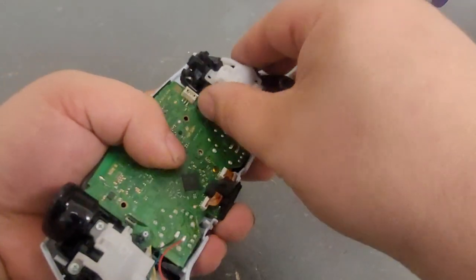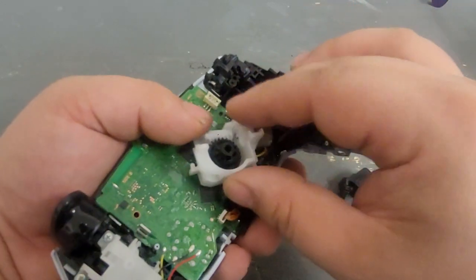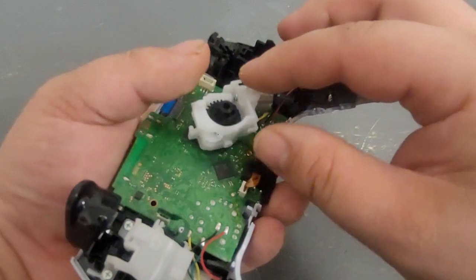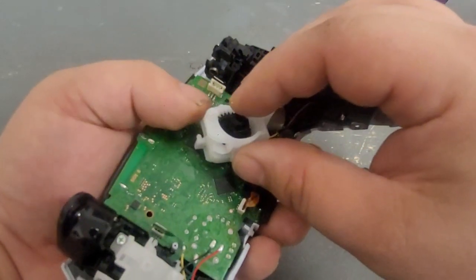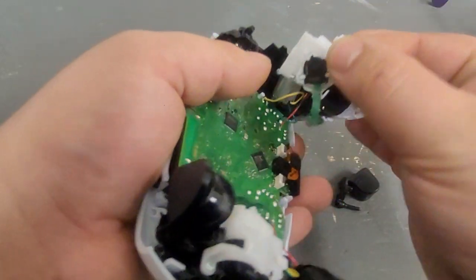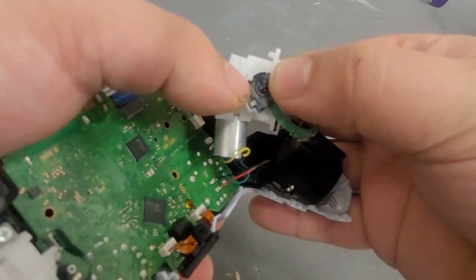Once you have those three screws out, you can just pop that straight out. This can fall out pretty easily, so I always like to lay that face up. If this falls out, it's not really that big a deal. You just need to make sure that it pops back through the potentiometer there.